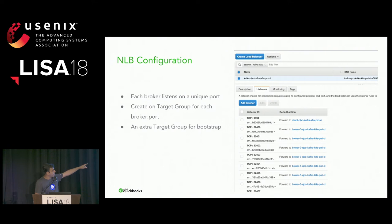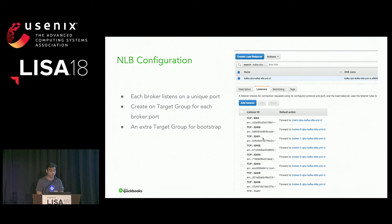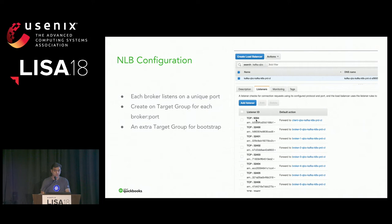What about NLB configuration? There's one NLB able to talk to all nine brokers behind it. Port 32400 is forwarded to broker-0, port 32401 is forwarded to broker-1, and so on. Kafka itself also requires a client port where anyone can connect and discover the current set of brokers.